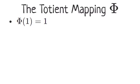For natural numbers n greater than one, Phi of n is the number of natural numbers less than n that are relatively prime to it.